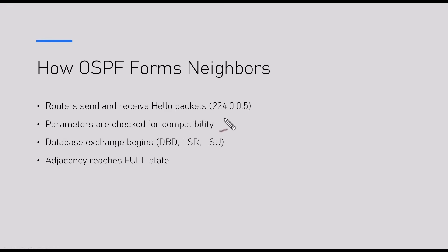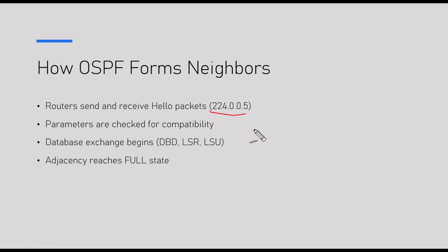Because routers send and receive hello packets to each other, those hello packets are sent using multicast. Multicast is a specific type of packet sent to multiple recipients — only those who have registered for that specific address will process it. If you are interested in receiving it, you explicitly register for that address. OSPF hello messages use the multicast address 224.0.0.5. There is another address, 224.0.0.6, which is used when selecting a designated router.